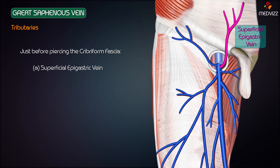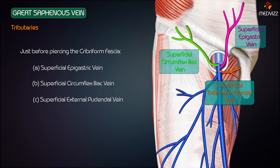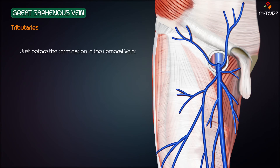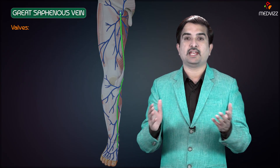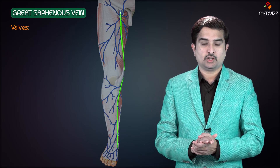Just before the long saphenous vein pierces the cribriform fascia, it receives the following tributaries: the superficial epigastric vein, the superficial circumflex iliac vein, and the superficial external pudendal vein. These veins accompany the corresponding superficial branches of the femoral artery. Just before the termination, the deep external pudendal vein drains blood into the femoral vein and is considered the last tributary of the long saphenous vein.